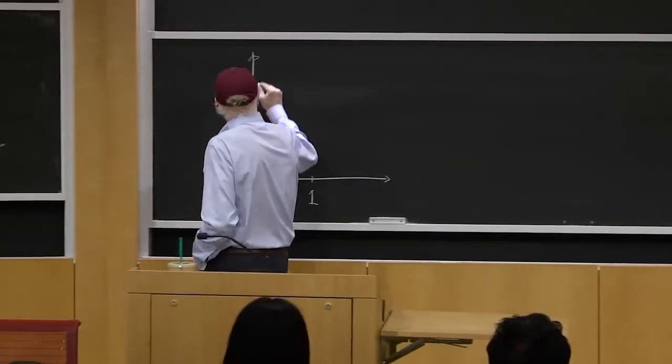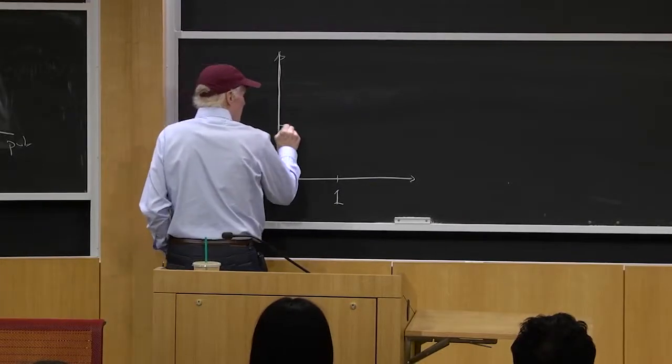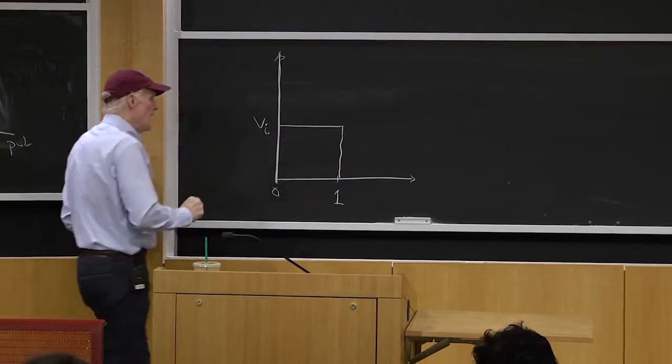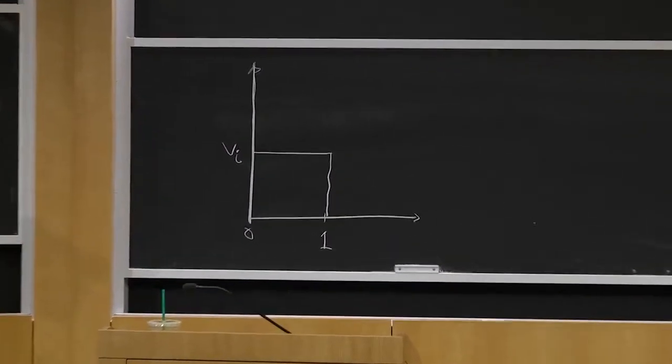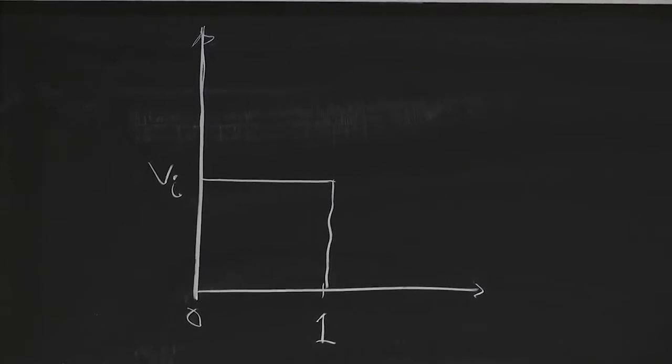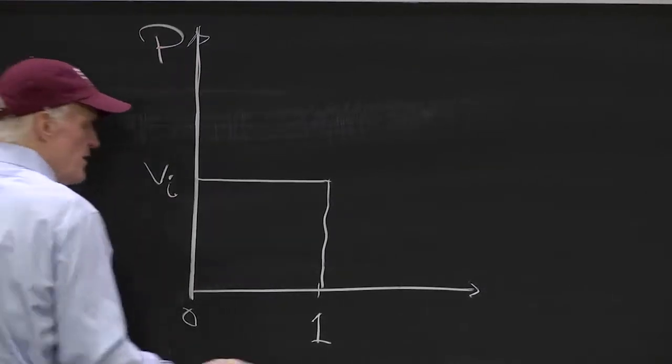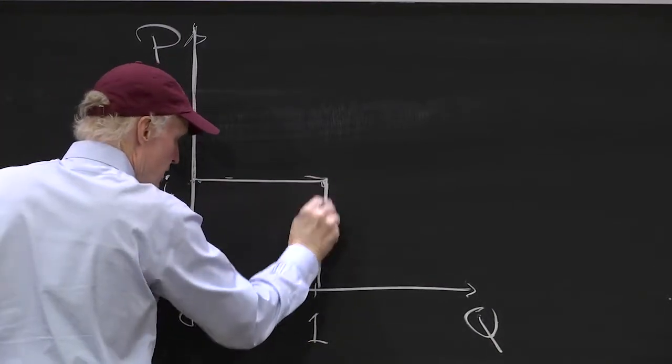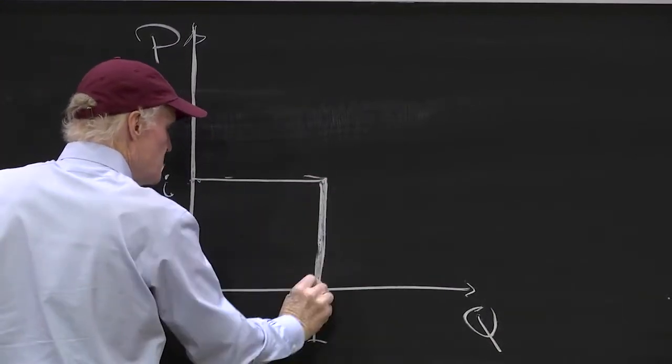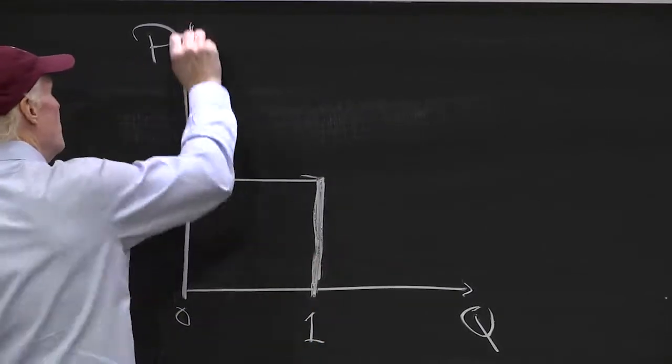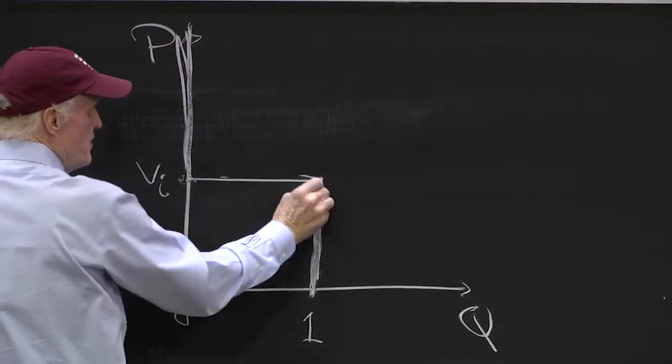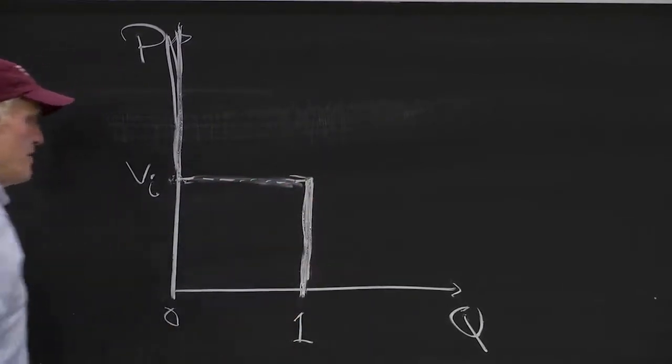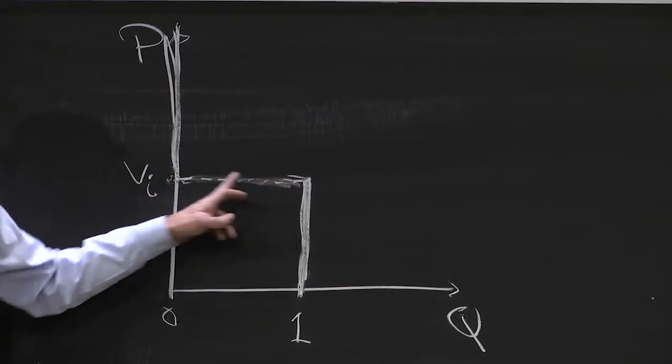We can think about each person as having a cutoff, and that cutoff we can call VI for person I - the value they place on this good in dollars. So if this is the price and this is the quantity, we can think of their demand curve as looking like that. Really, the parts that are well-defined are this part. You can either think of this as horizontal or dash it in. In keeping with our model, you really can't choose anything in there.